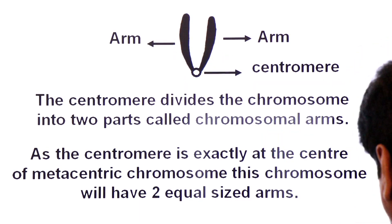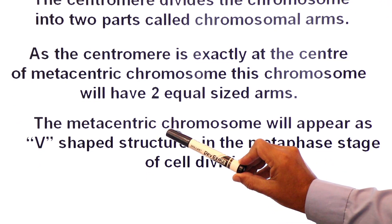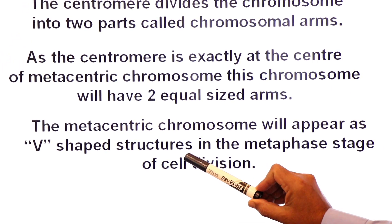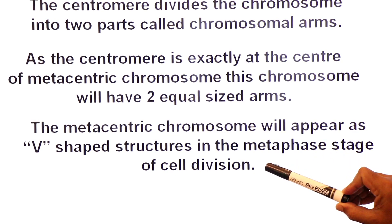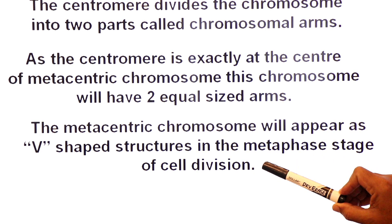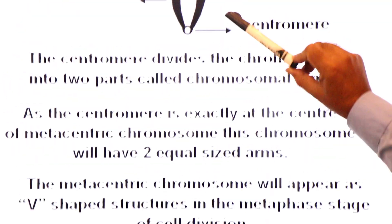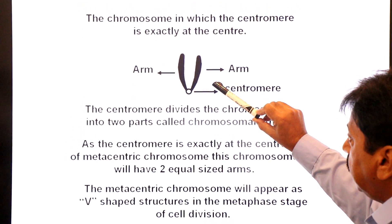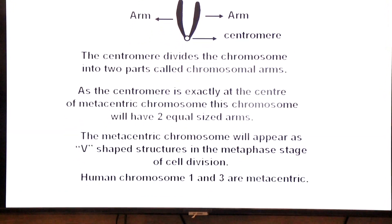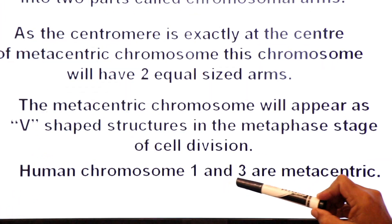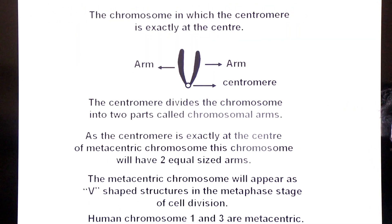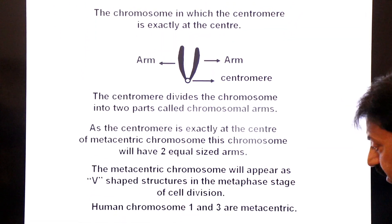Because the centromere is exactly in the middle and the arms are equal, the metacentric chromosome appears as a V-shaped structure in the metaphase stage of cell division. Examples from the human karyotype: human chromosomes 1 and 3 are metacentric chromosomes.